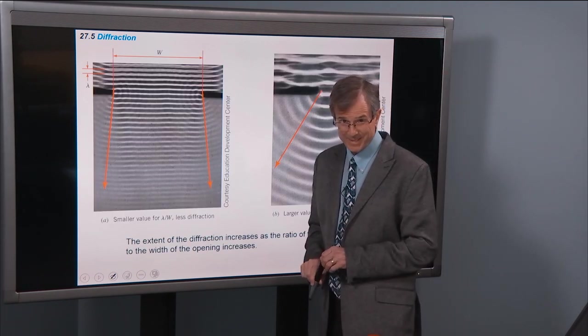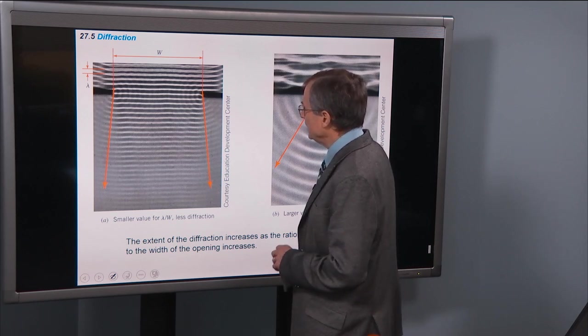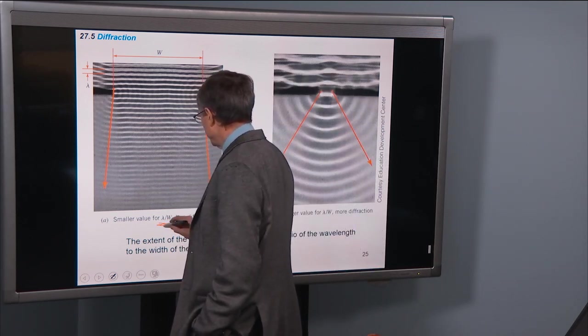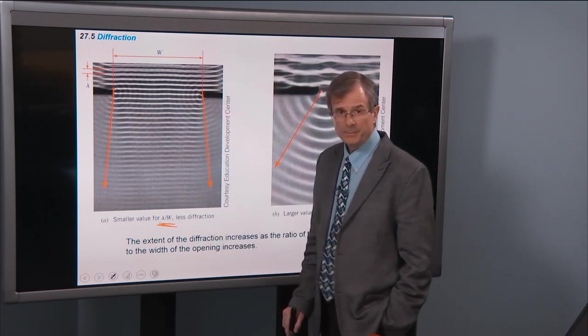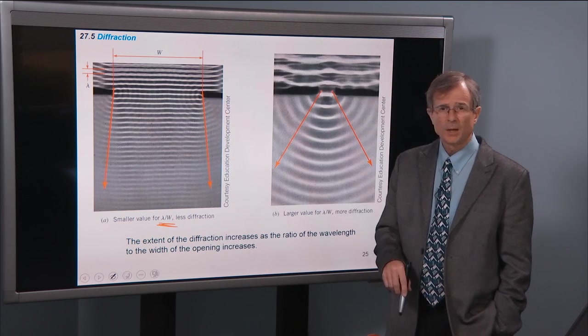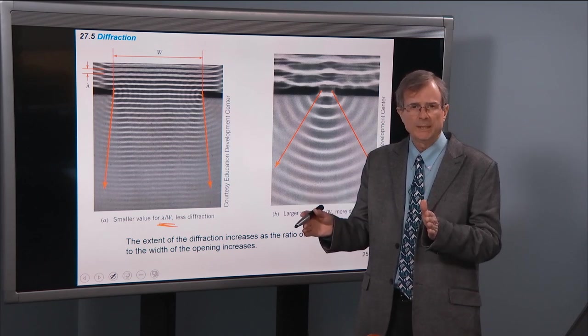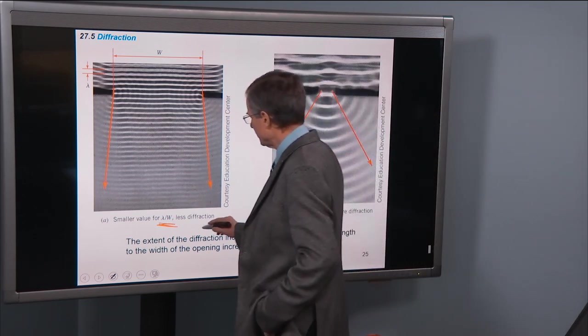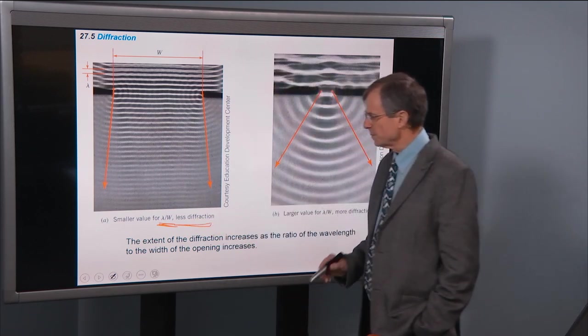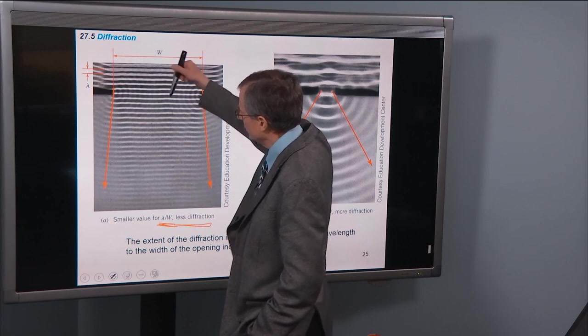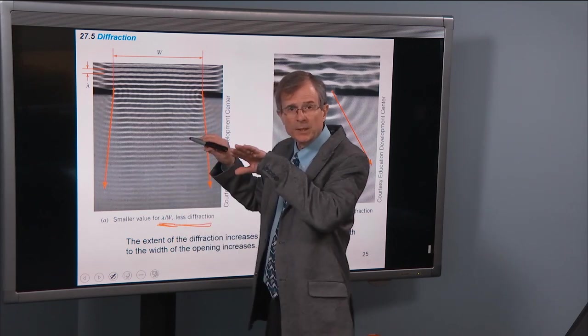So if, as we talked about in chapter 17, if the wavelength lambda is small compared with the width of this opening, then you don't get as much diffraction. Those small wavelengths just kind of head straight through and don't bend very much around the corners.